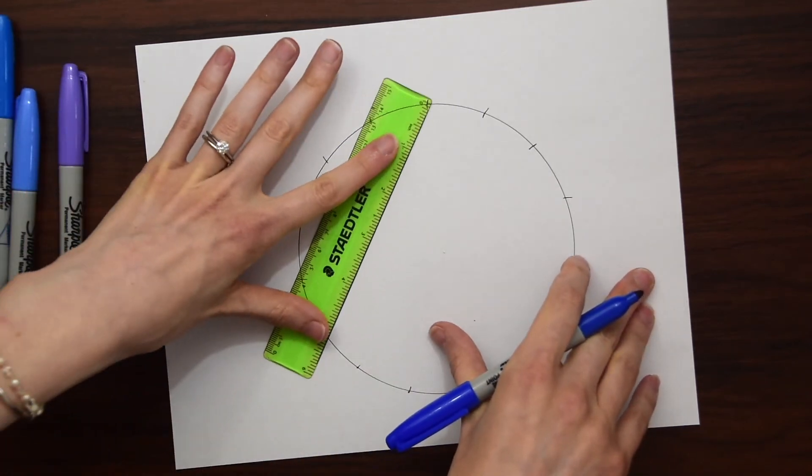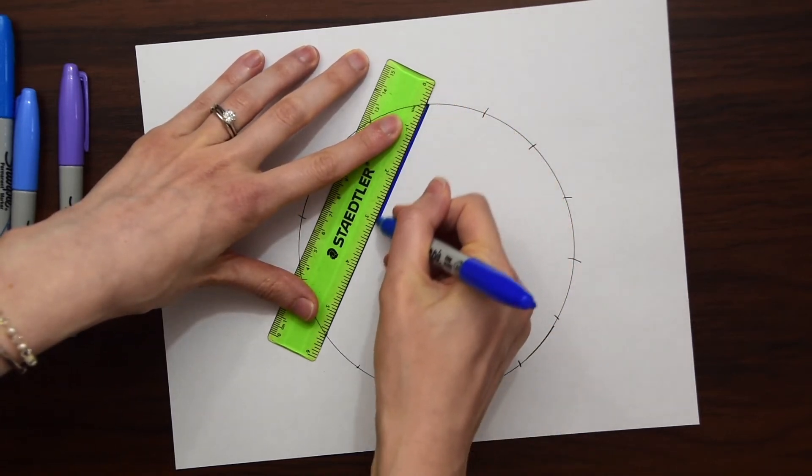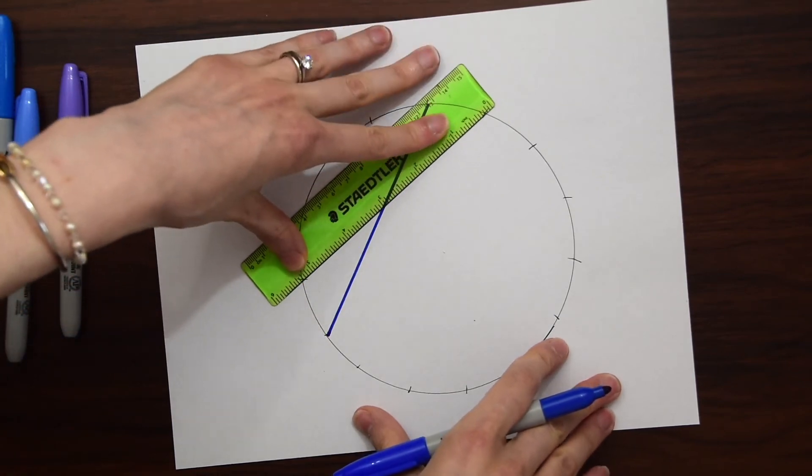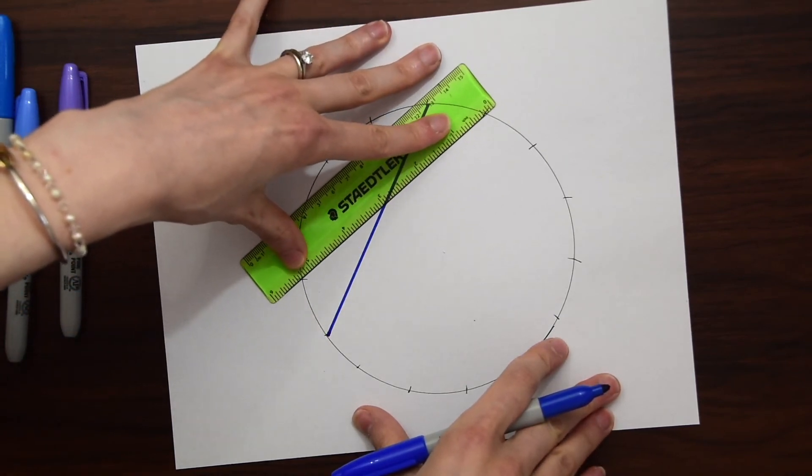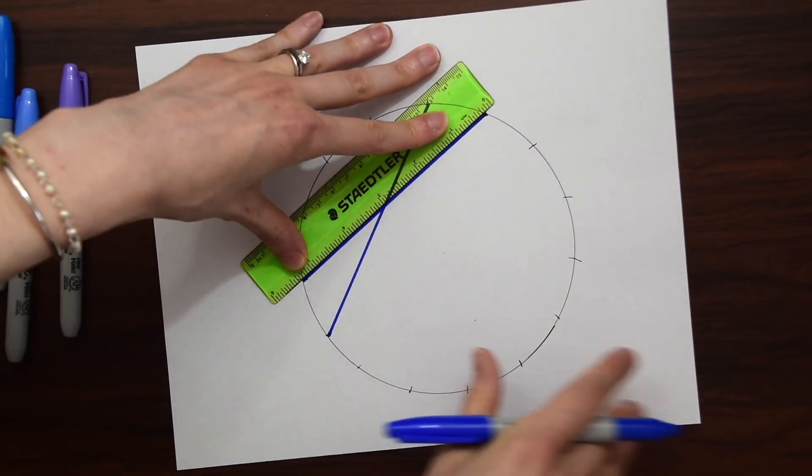We're going to line up two points and draw our first line. Then we're going to twist the ruler one point forward and do the same thing. We're going to do this all the way around until all the points have a line coming from them.